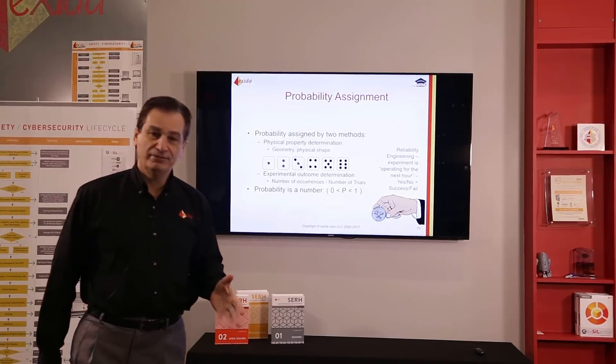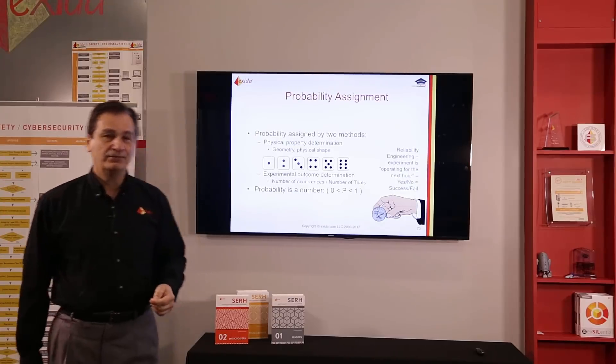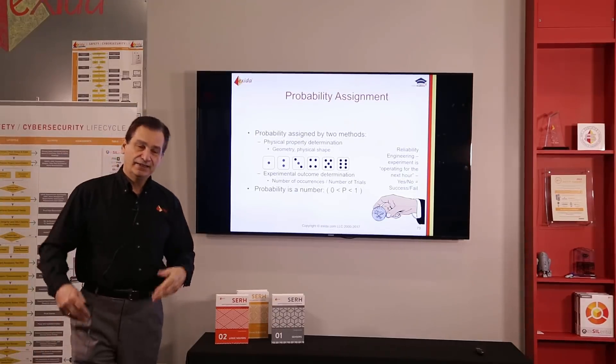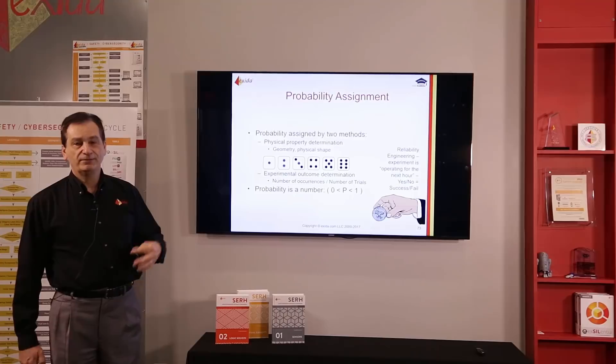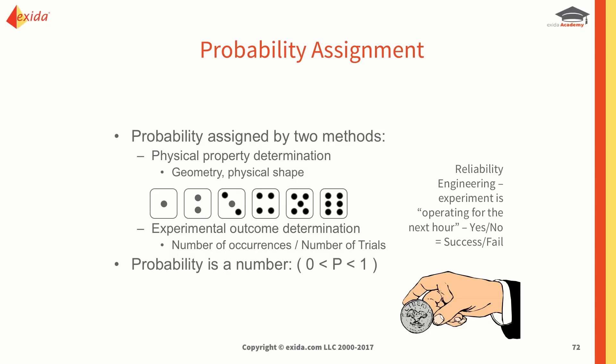Many of you I'm sure remember at school tossing a coin, recording the outcome — was it a head, was it a tail — and doing that for a certain period of time to see roughly what we get. So physical geometry and experimental outcome are the two methods, and in both cases our probability is a number between zero and one. It's impossible to get a probability of more than 100%.